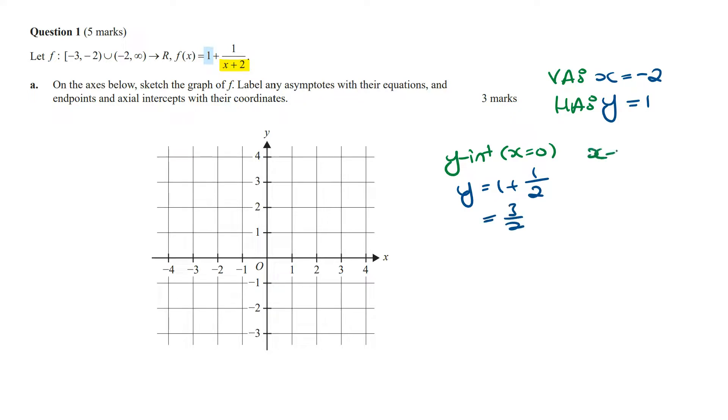For the x-intercept, we let y = 0 and then solve for x. Doing this, we're going to get 1 + 1/(x + 2) = 0. Rearranging this, 1 = -1/(x + 2). Cross-multiplying, we're going to get x + 2 = -1, so x is going to equal -3.